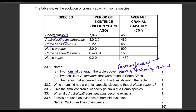Next: name the two fossils of A. africanus that were found in South Africa. That is the Taung Child, Mrs. Ples, and Little Foot. Any two of these would be accepted.